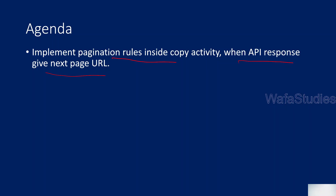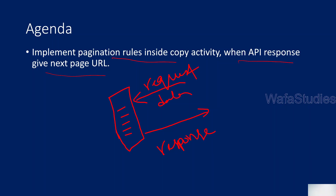So firstly I hope everyone knows what pagination, what an API is. If you don't know, in one minute I will explain. An API is a program or system that will take some request and then give you back a response. In the request you can send some data or you don't need to, depending upon how the API is developed. When it comes to response, it will give back a response in JSON format usually. So this is called an API.